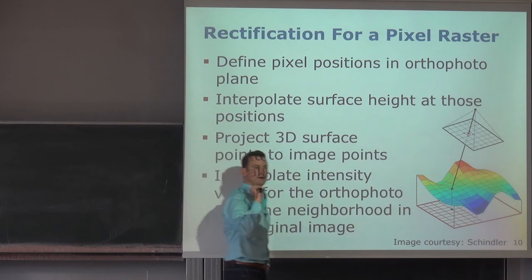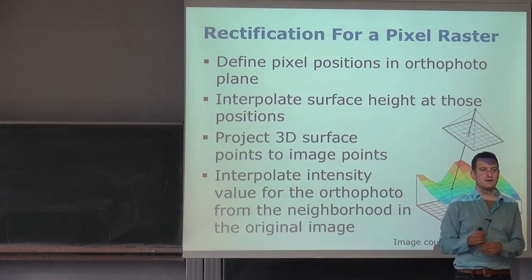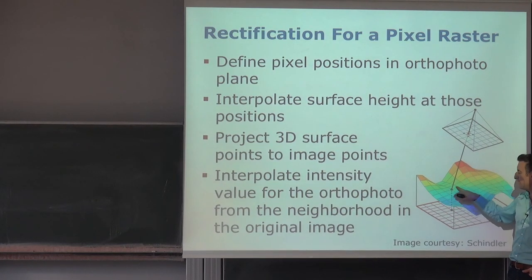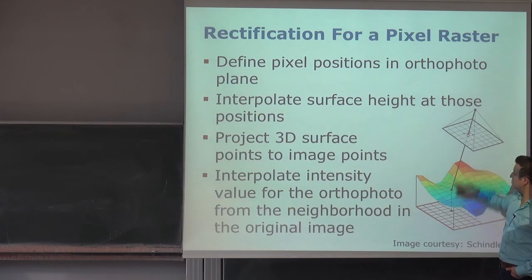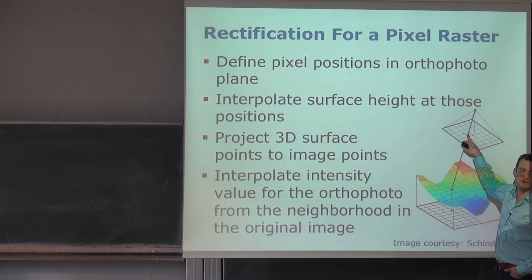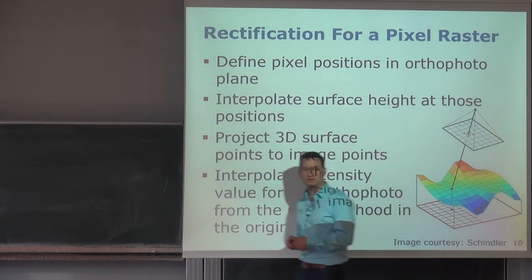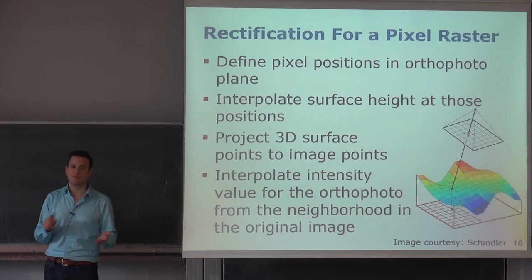We can do this interpolation with a nearest neighbor approach, bilinear, or bicubic interpolation — techniques covered in the Photogrammetry 1 course. So the two interpolation steps are: interpolating the Z height value from the surface model, and interpolating the RGB value in the input image.